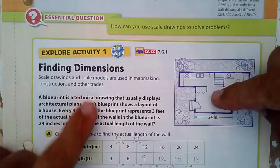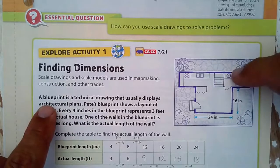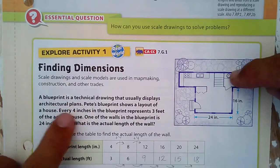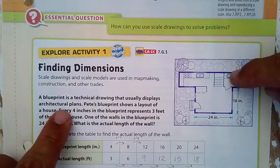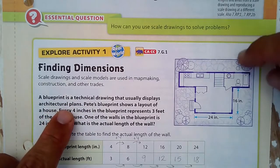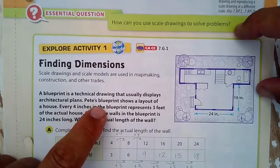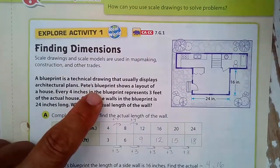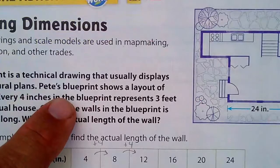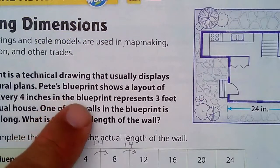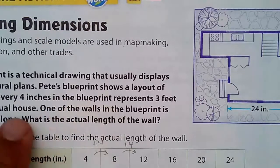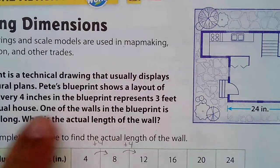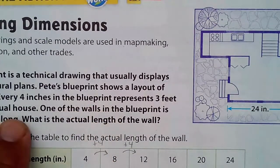What we're looking at here is a blueprint — a technical drawing that usually displays architectural plans. Pete's blueprint shows a layout of a house. Every four inches in the blueprint represents three feet in the actual house.